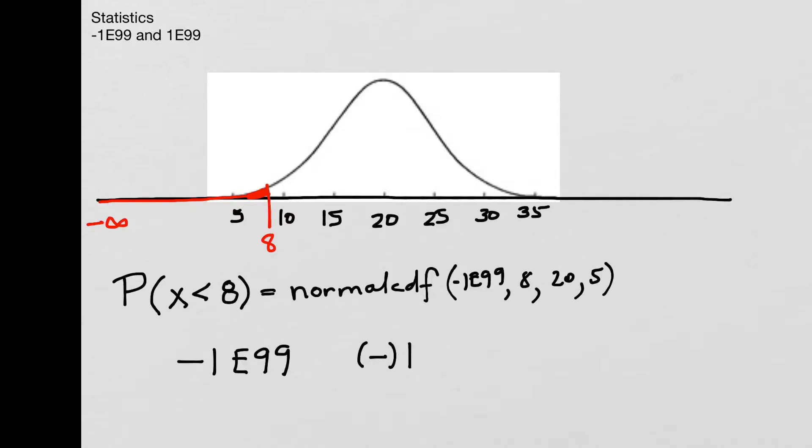And to get the E, the tricky thing here is that what you're going to look for is the comma key, and that's just above the 7 on your graphing calculator. And right above there, right above the button, it says EE. So there's two E's. That's the button you're looking for.